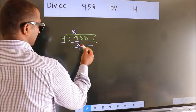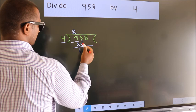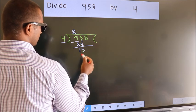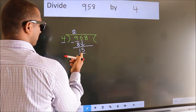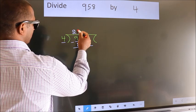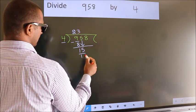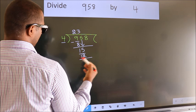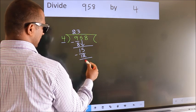After this bring down the beside number. So 5 down. So 15. A number close to 15 in 4 table is 4 threes, 12. Now we subtract. We get 3.